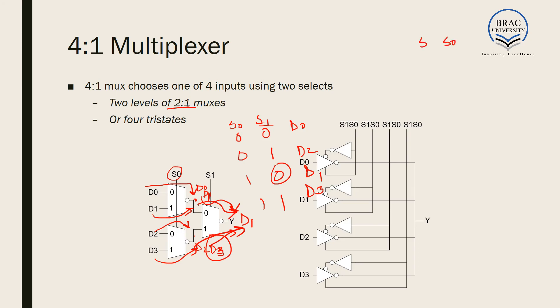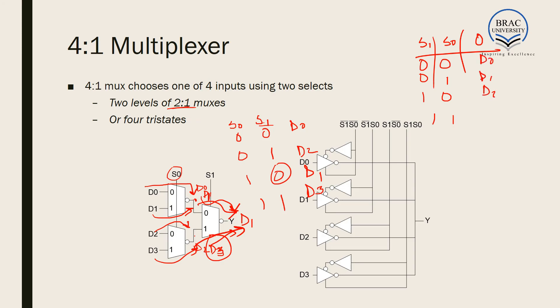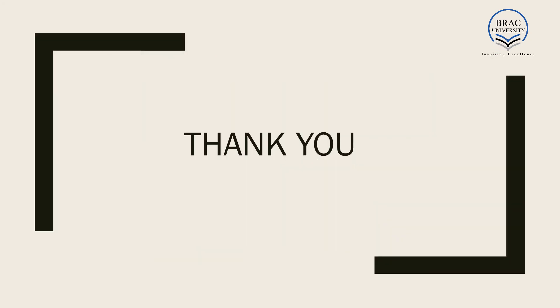The truth table is: S0=0, S1=0 → output D0; S0=0, S1=1 → output D2; S0=1, S1=0 → output D1; S0=1, S1=1 → output D3. Thank you so much. That's all for today.